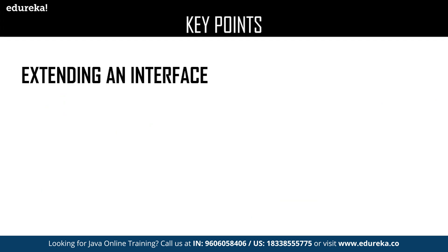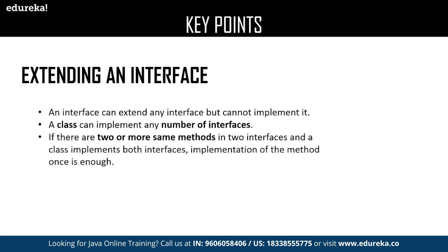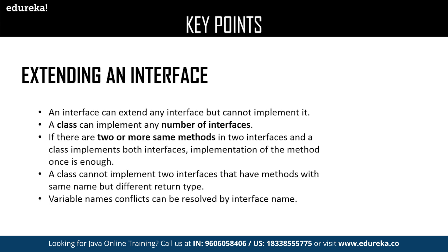The next key point is extending an interface. An interface can extend any number of interfaces but cannot implement them, whereas a class can implement any number of interfaces. If there are two or more same methods in different interfaces, the class can implement all the interfaces but one single method is enough to perform the operation. However, a class cannot implement two interfaces that have methods with the same name but different return type.